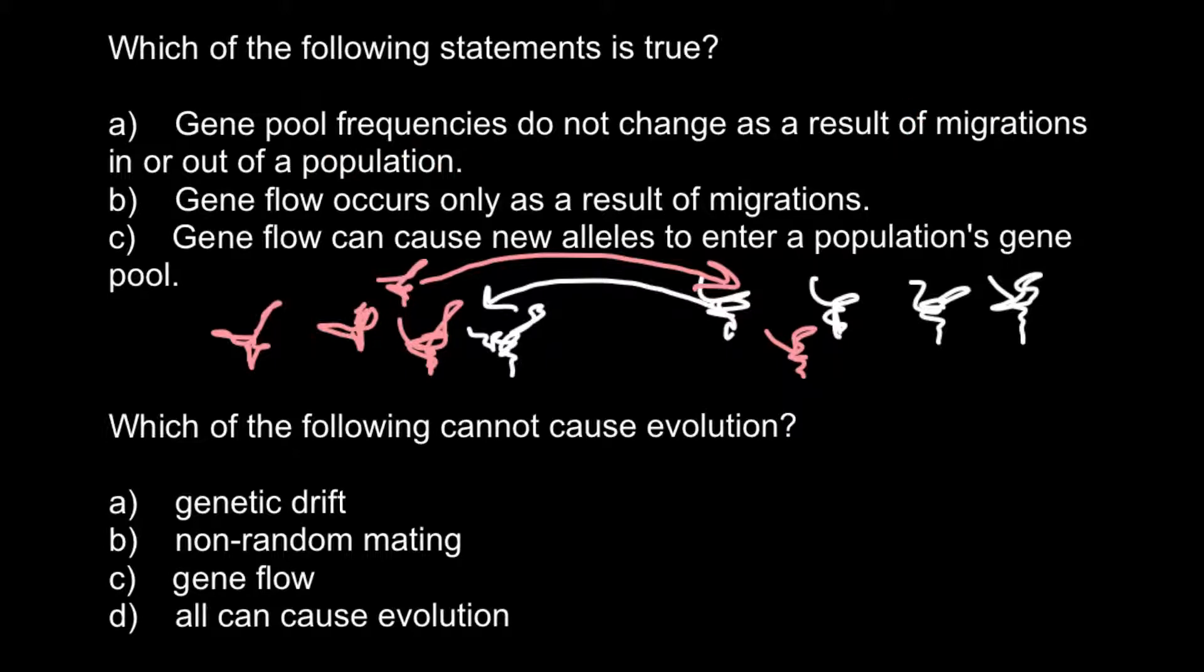Answer B: Gene flow occurs only as a result of migrations, and this is also not true. Because it's not necessary for, in our example, one of the birds to move here and stay. It can just come, stay here for a while, just enough time to mate with one of the other birds here, and return back.